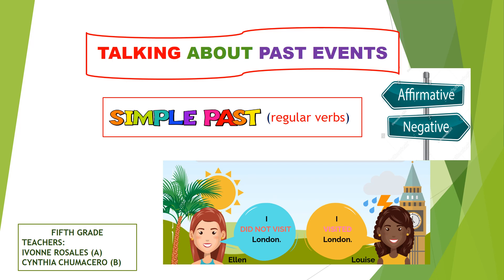You know there are two types of verbs: regular and irregular verbs. In this video we are going to reinforce the use of the simple past of regular verbs to talk about past events.